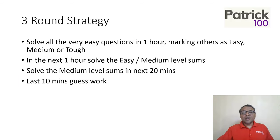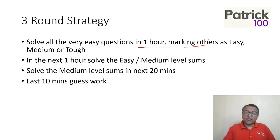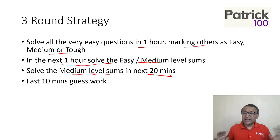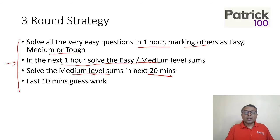The three-round strategy is similar, but broken into three levels. In the first round — about one hour — go through the entire paper, solve the very easy questions which are sitters, high accuracy and low time. Mark the remaining questions as easy, medium, or tough. In the second round — another hour — solve the easy or medium questions from what you marked. And in the last 20 minutes, come back to the medium questions. So the breakdown is one hour, one hour, 20 minutes. You need to identify which questions go in each round based on experimentation.